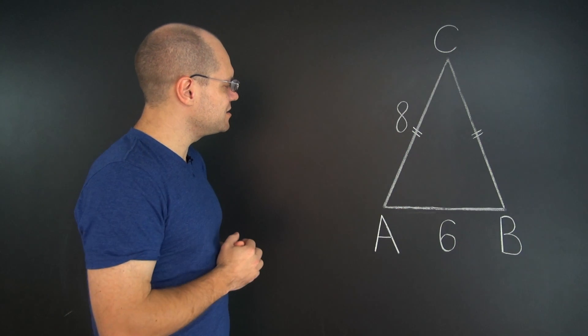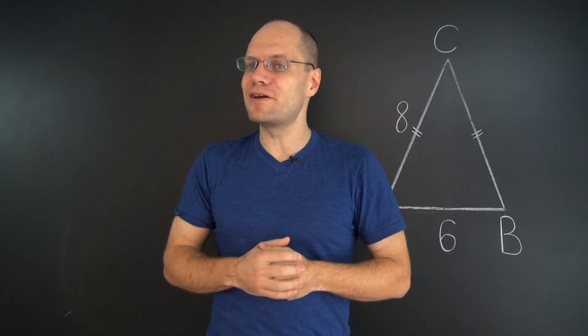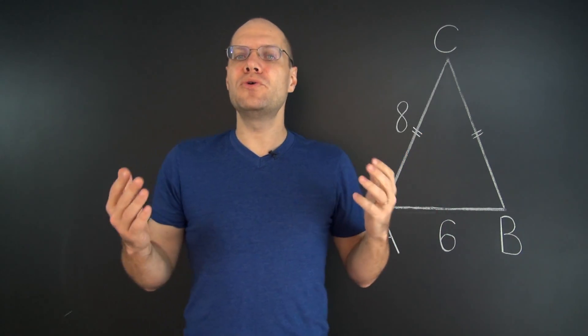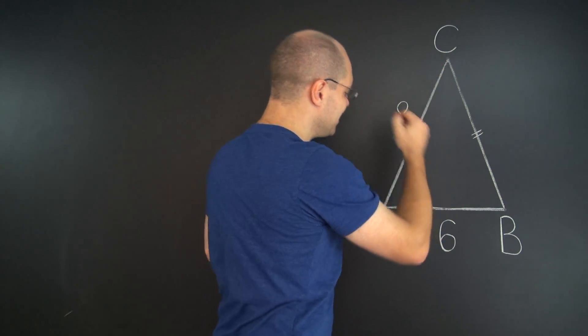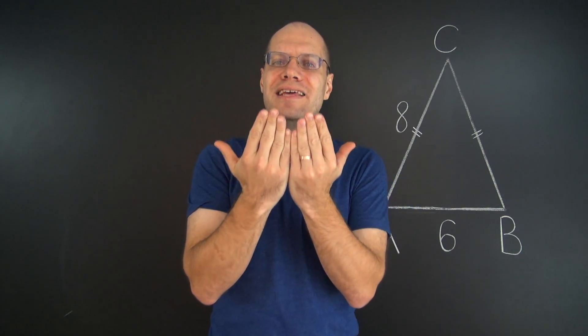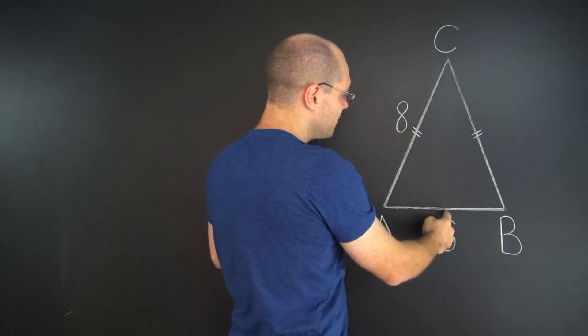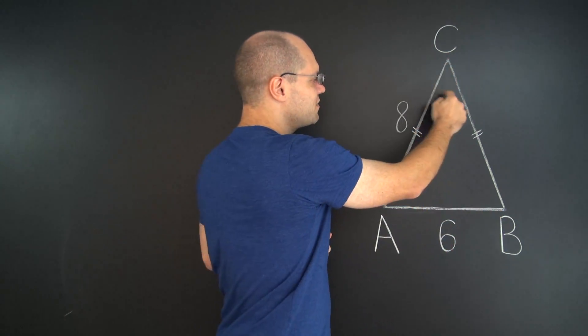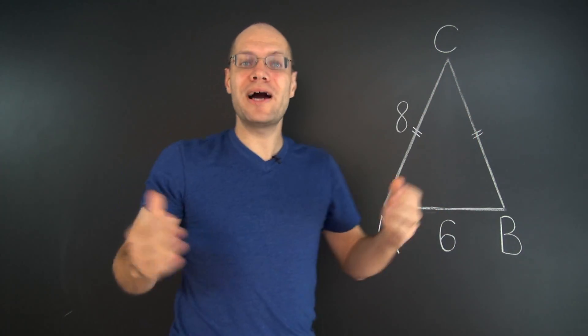But in this situation, you really want to take advantage of the isosceles property of the triangle. And when you work with isosceles triangles, you almost always want to draw this special line, which cuts the triangle into two exactly equal parts. It acts as the median of this side, as the bisector of this angle, and as the height of the triangle. So why don't we draw it in?